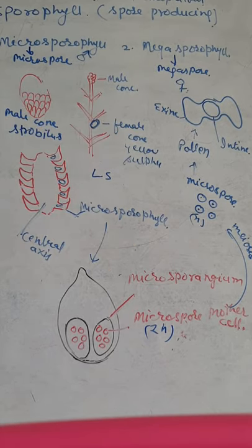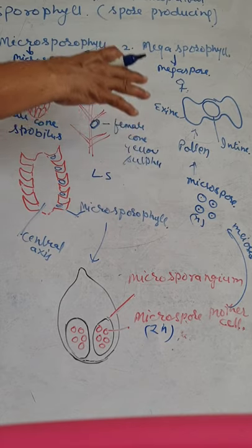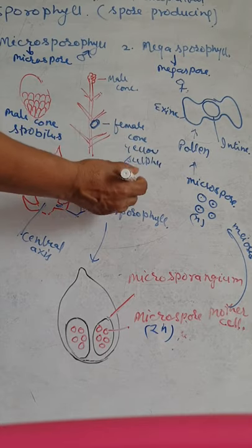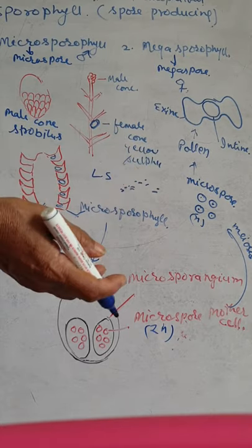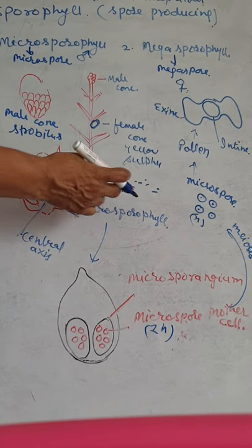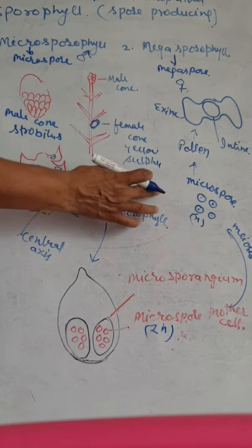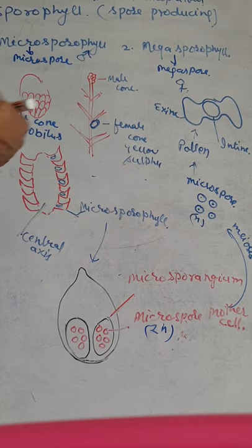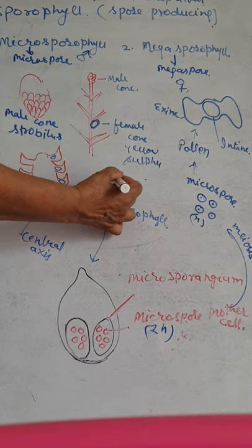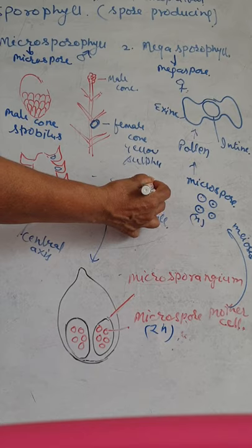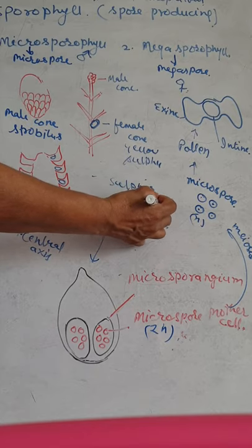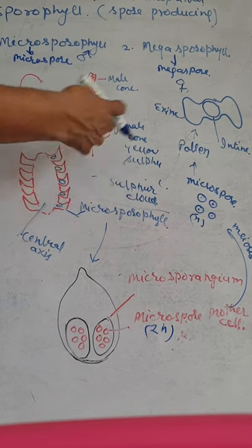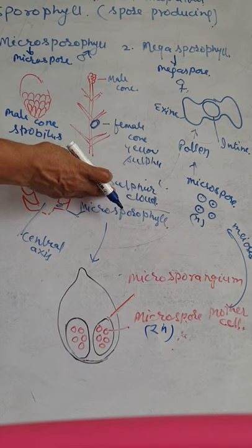When pollination occurs in the pine forest, yellow coloured dust is seen clearly all around. This yellow dust is called the sulphur cloud. The sulphur cloud is nothing but the pollen grains that spread around the pine forest.